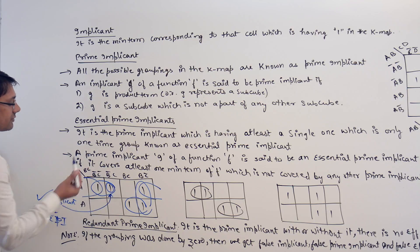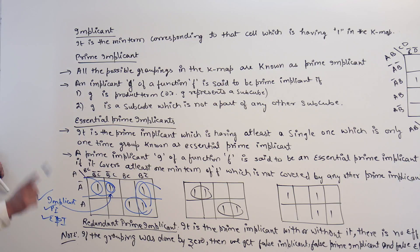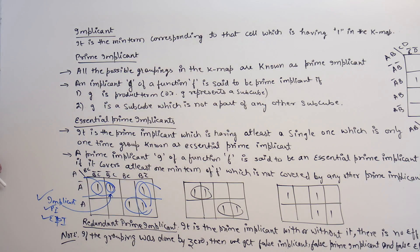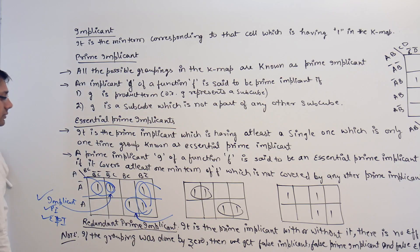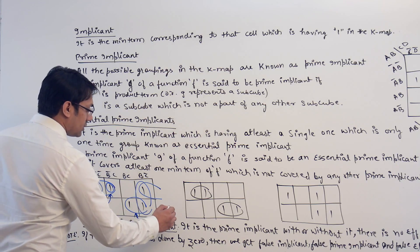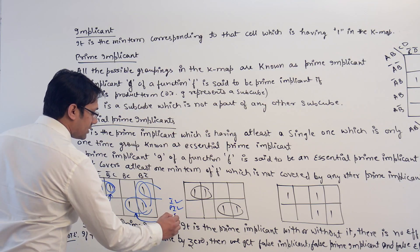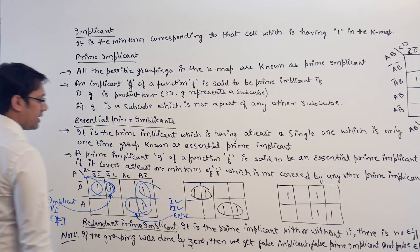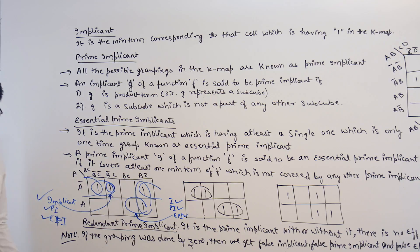This is one single cell, that itself is an implicant. This is a prime implicant because it is a subcube which is not completely a part of any other subcube. Therefore it is a prime implicant, and it is an essential prime implicant. If you take this particular subcube, it is a prime implicant, an implicant, as well as an essential prime implicant, because it is covering at least one one which is not covered by any other subcube.